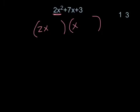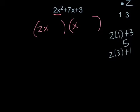The big question now is how am I going to get 7 out of 1 and 3? Remember that one of these numbers, either the 1 or the 3, is going to be multiplied by 2. So if I was to multiply 2 times 1 and add it to the 3, I would get 5. If I was to multiply 2 times 3 and add it to 1, I would get the 7.